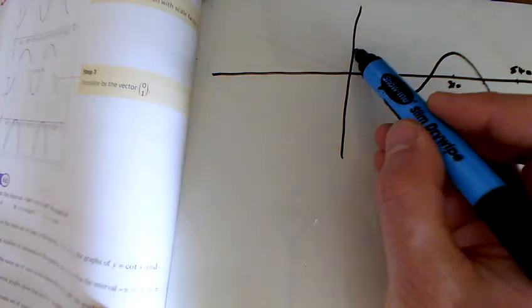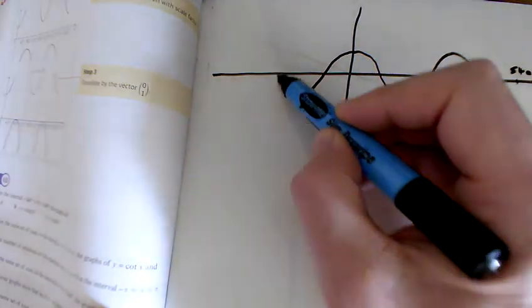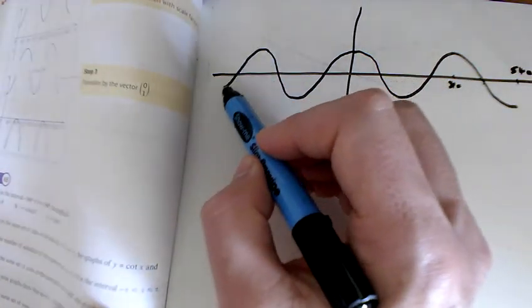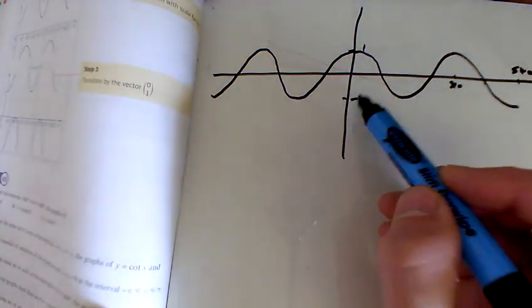We need to go the other way as well, and so all the way down and all the way up again, that's minus 360, and then we need to finish that bit down the bottom there. This point here is 1, this point here is minus 1.